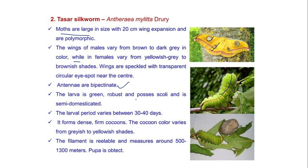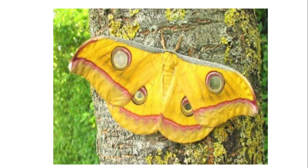The larvae is green, robust, possesses scoli, and is semi-domesticated. The larval period is 30 to 40 days. It forms dense firm cocoons whose color varies from gray to yellow with shades. The filament is reelable and measures around 500 to 1300 meters. The pupa is obtect type.